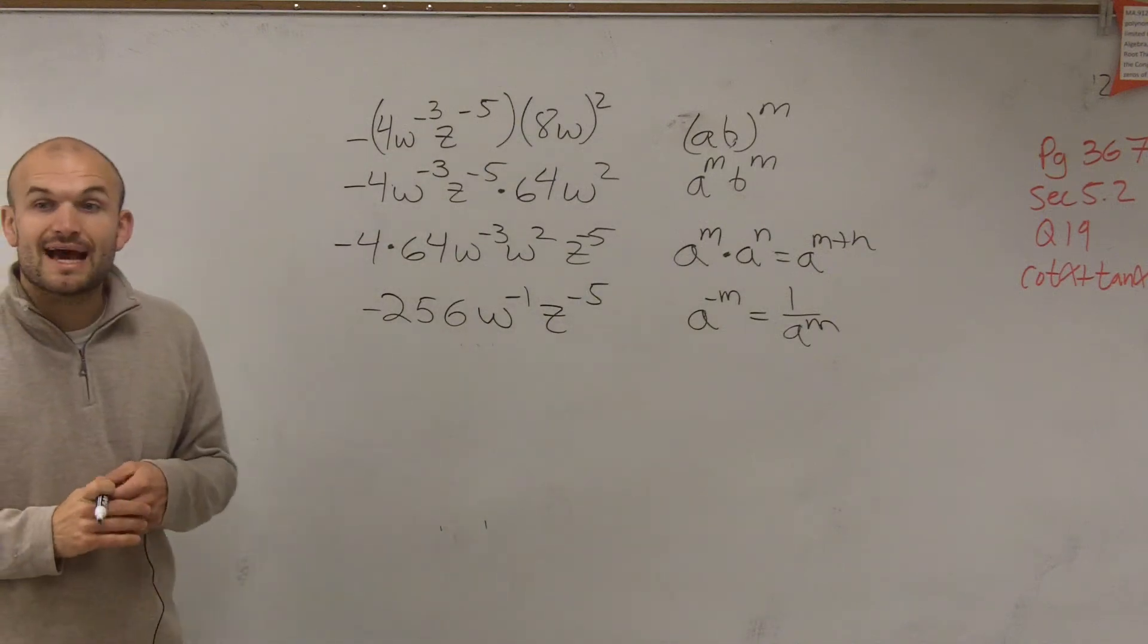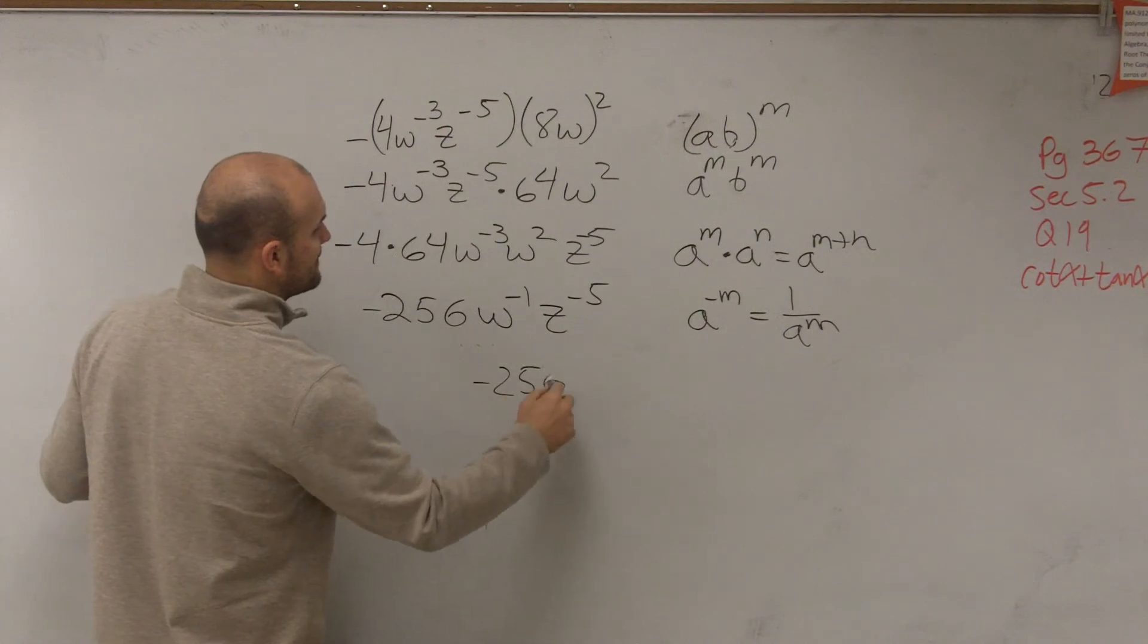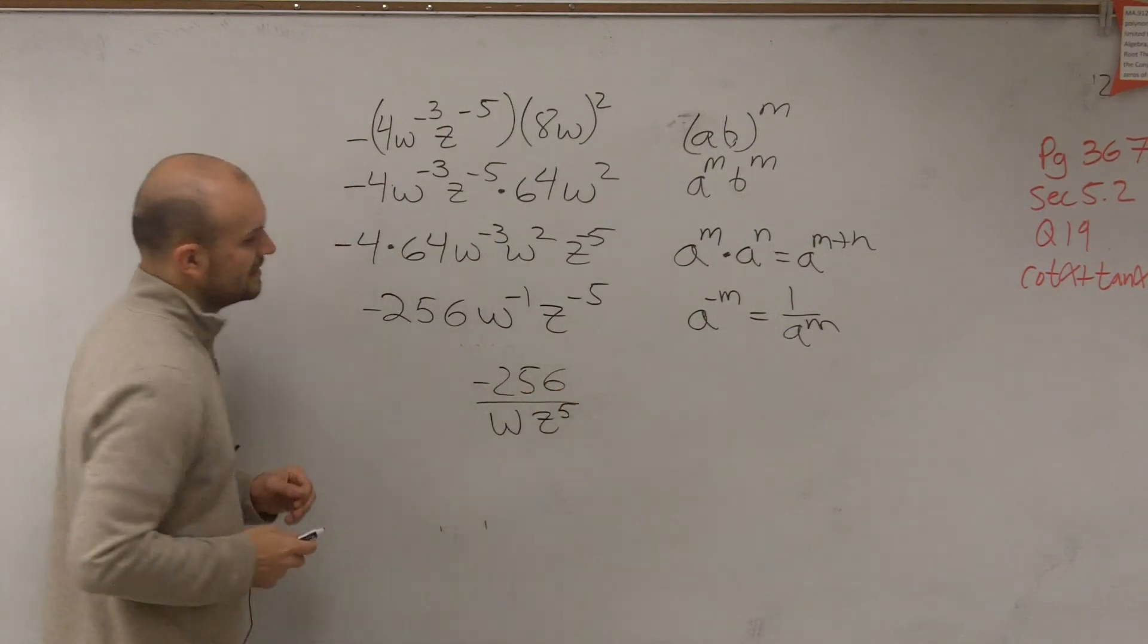So therefore, to write this expression without any negative exponents, I'll have negative 256 divided by wz to the fifth.